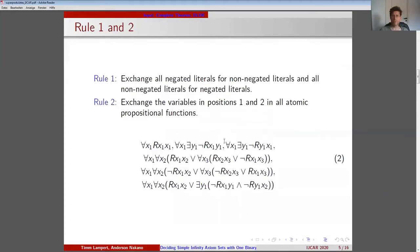So our question is how to generate complete infinity axiom sets from a complete infinity axiom set. Two routes are plain from considering bijections between models. Rule 1: exchange all negated literals for non-negated literals and vice versa. Rule 2: exchange the variables in positions 1 and 2 in all atomic propositional functions. However, this yields only one further infinity axiom set in the case of DLOR. So some additional rules are needed to produce non-trivial further infinity axiom sets.